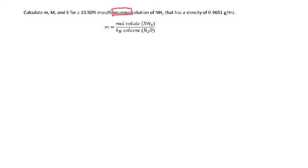Now that we know what we need, we just have to figure out moles of ammonia divided by kilograms of solvent. There's a little bit of a trick: we know we have a 10.5% mass percent solution. When you're given just a mass percent, you can assume as much of it as you want, but to make our lives easy, we're going to assume we have 100 grams of the solution.